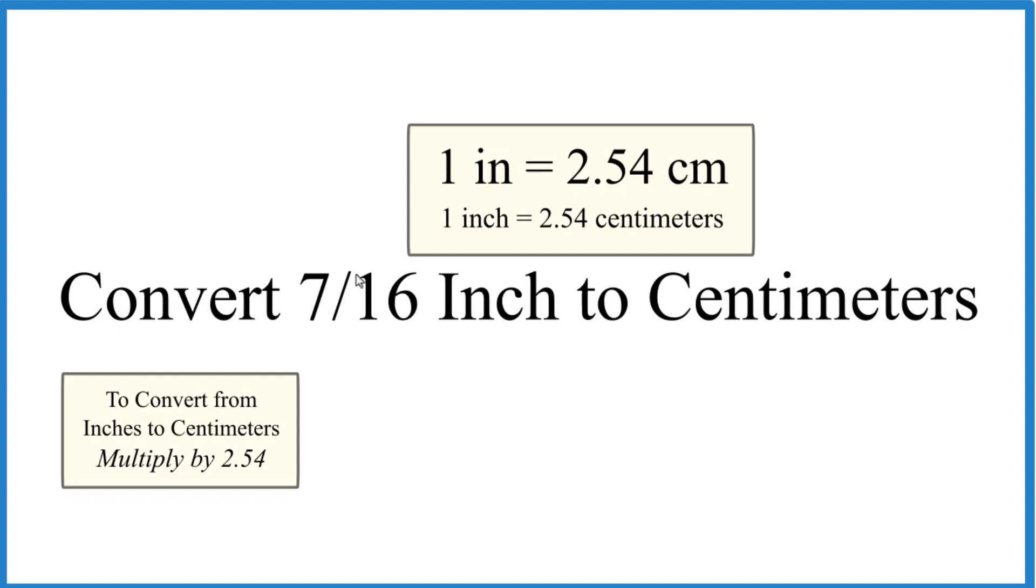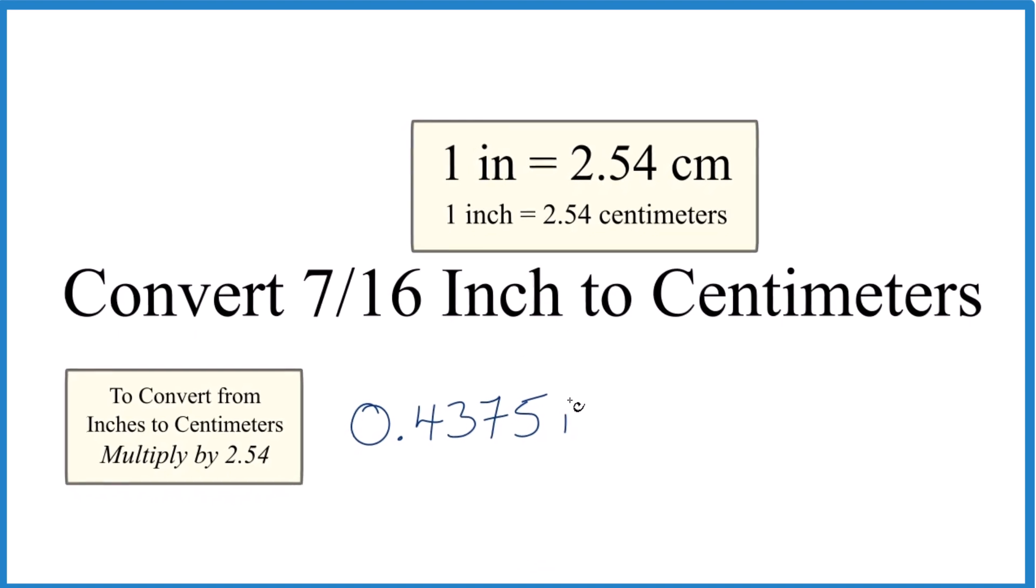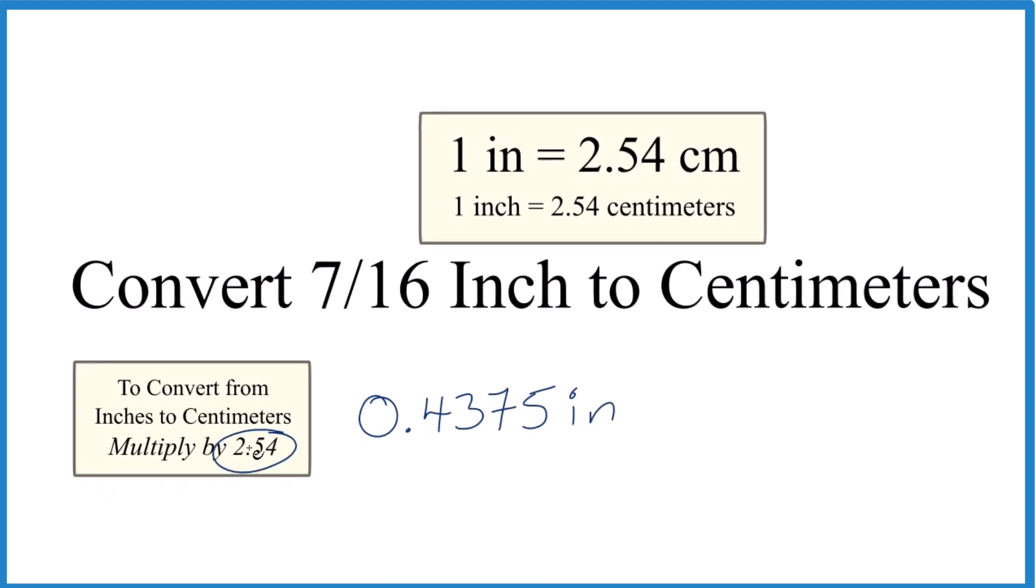So on my calculator, I divide 7 by 16 and I get 0.4375. Those are the inches here, and we're going to multiply that by 2.54 because we're going from inches to centimeters. So times 2.54.